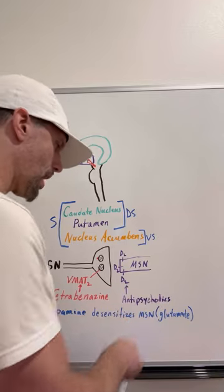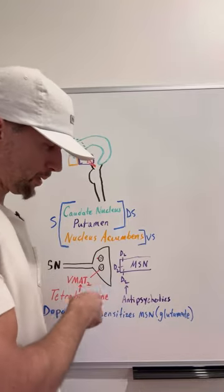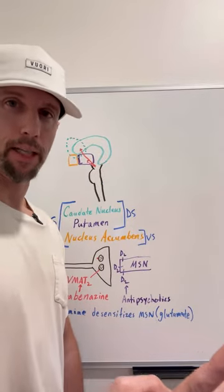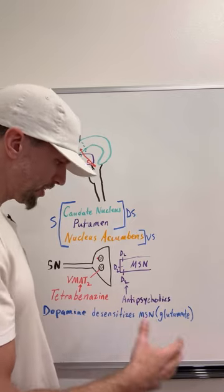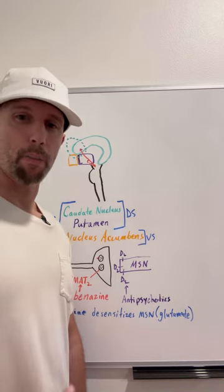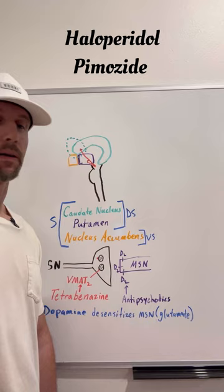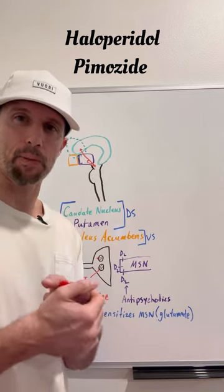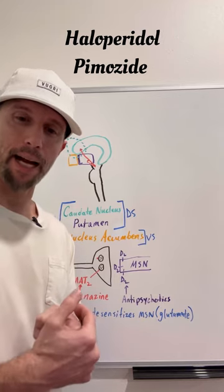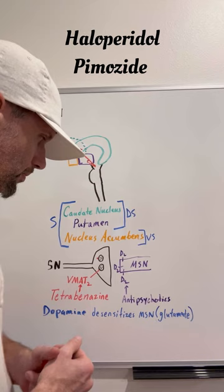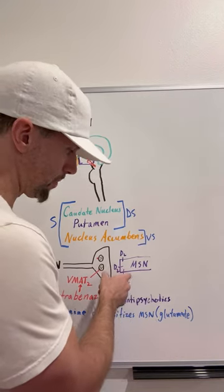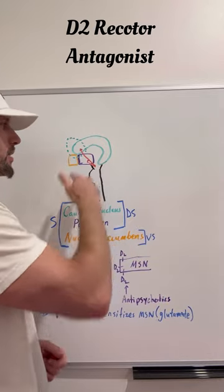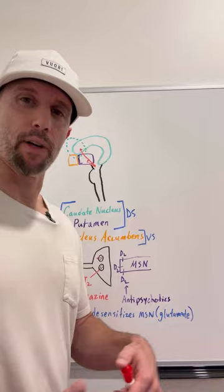The other type of drug is an antipsychotic, which binds to the receptors for dopamine — specifically the D2 type, found in these medium spiny neurons in the putamen and anterior caudate nucleus. Examples include haloperidol and penozide. These drugs bind to the D2 receptors but don't stimulate them — they act like competitive inhibitors, taking up space and preventing the actual dopamine from binding. They are D2 receptor antagonists. Either way, you're reducing dopamine's effect on these inhibitory neurons so they can be more inhibitory and you don't get as much of that Huntington's chorea.